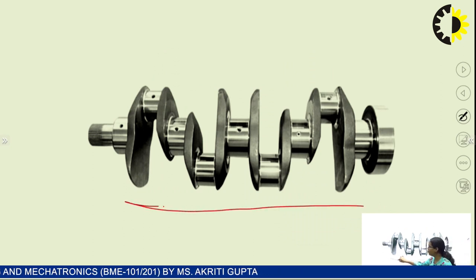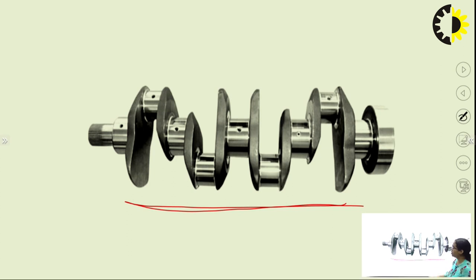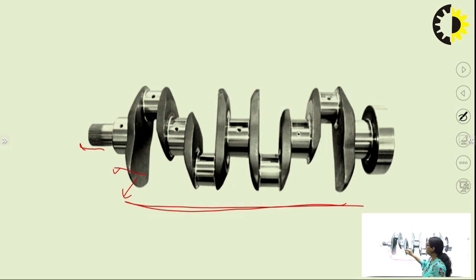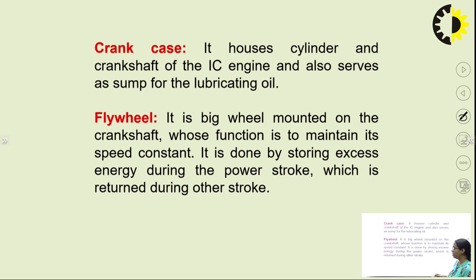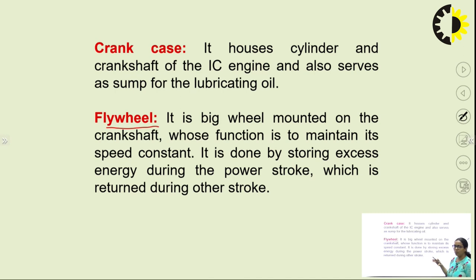In a multi-cylinder engine, the crankshaft has different crank orientations for each cylinder. The crankcase is the housing of the crankshaft where the crank transfers the reciprocating motion of the piston into the rotary motion of the crank. The flywheel is attached to the crankshaft to maintain the speed and power of the engine across each stroke of the piston — it is a large wheel that stores excess energy during the power stroke and returns it during other strokes.